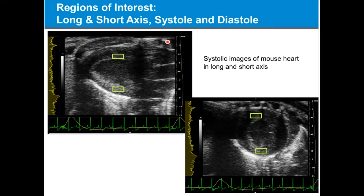These are just examples of the regions of interest that we collected with the RF data. You can see the RF spectra here. I would caution people undertaking RF imaging: it collects huge amounts of data, and you need to be ready to collect 100 gigabytes of data at a single time point. We put small regions of interest in systole and diastole in both the septum and the posterior wall, and similarly in the short axis in the anterior and posterior sections of the heart.